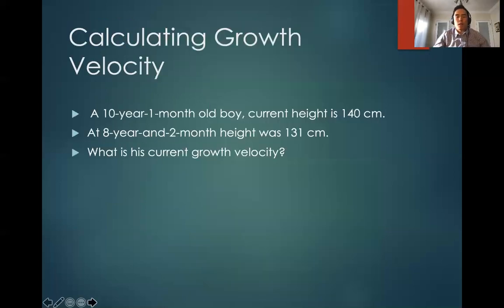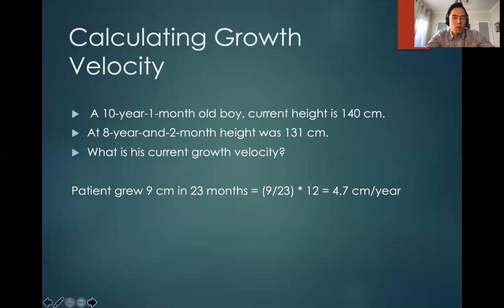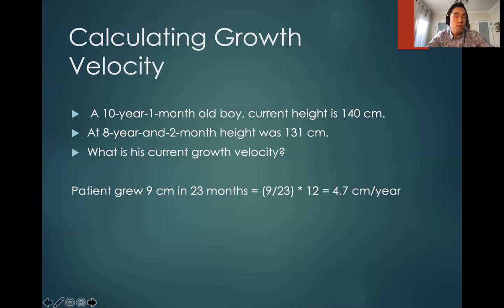Calculating growth velocity is a very simple mathematical calculation. For example, a 10-year and 1-month old boy has a current height of 140 centimeters. His previous height at 8 years and 2 months was 131 centimeters. He grew a total of 9 centimeters over 23 months, so 9 divided by 23 times 12 gives a growth velocity of 4.7 centimeters per year. For a pre-pubertal boy, 4.7 centimeters per year sounds normal.